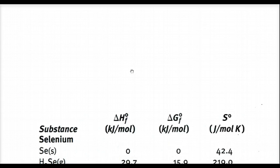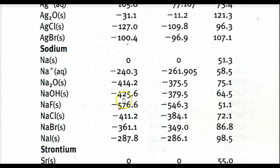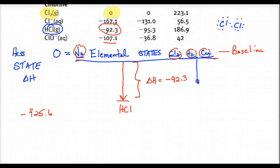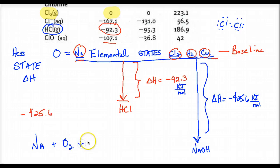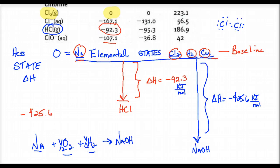Getting back to sodium hydroxide — we get negative 425.6 kilojoules per mole. When sodium hydroxide is formed from its elements — pure sodium, pure oxygen (diatomic), pure hydrogen (diatomic) — that change equals delta H equal to negative 425.6 kilojoules per mole. These diatomic elements are designated as zero at the baseline. To make one mole of NaOH, I need to put halves in front, giving me one mole of product.